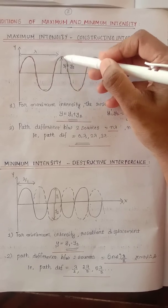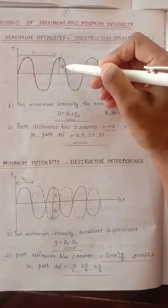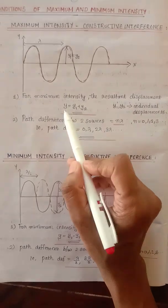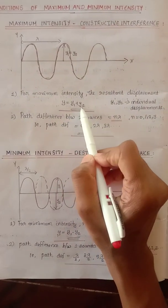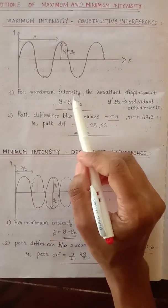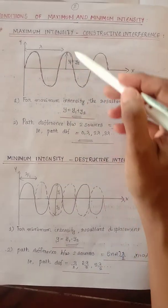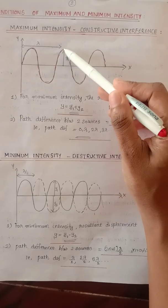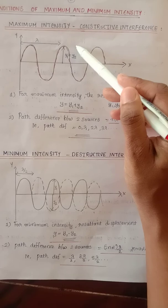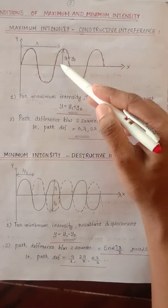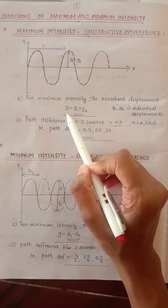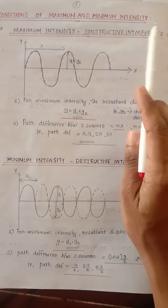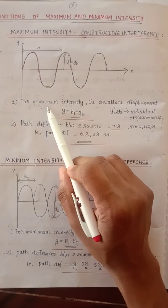Two waves are present: one wave is y1 and the other wave is y2. Total displacement y is equal to y1 plus y2, where y1 and y2 are individual displacements. That is why we get maximum intensity. For example, if one wave has amplitude 2 meters and the other wave has amplitude 2 meters, the resultant wave is 4 meters at that particular point. Total displacement is the sum of individual displacements — that is the first condition for constructive interference.